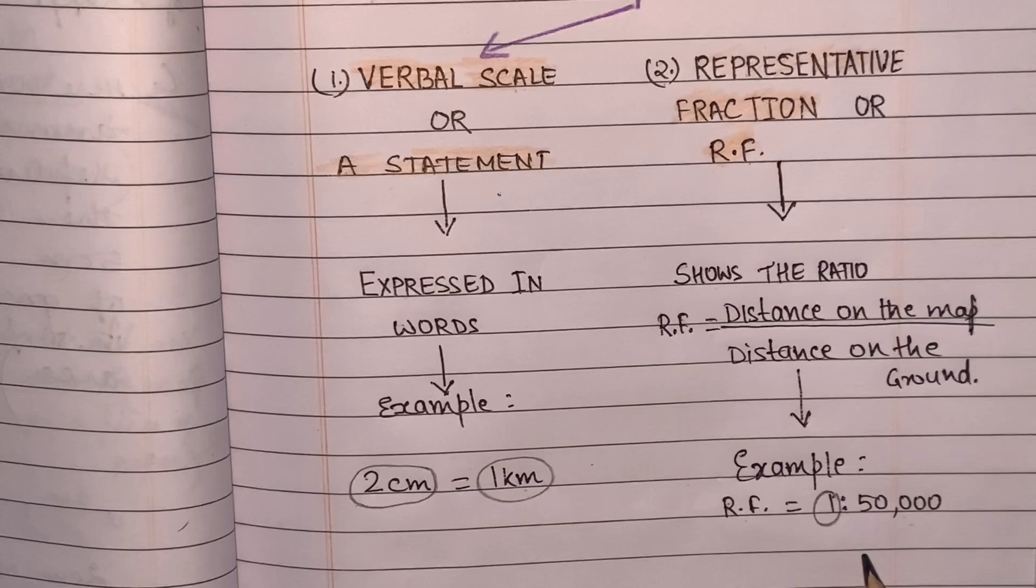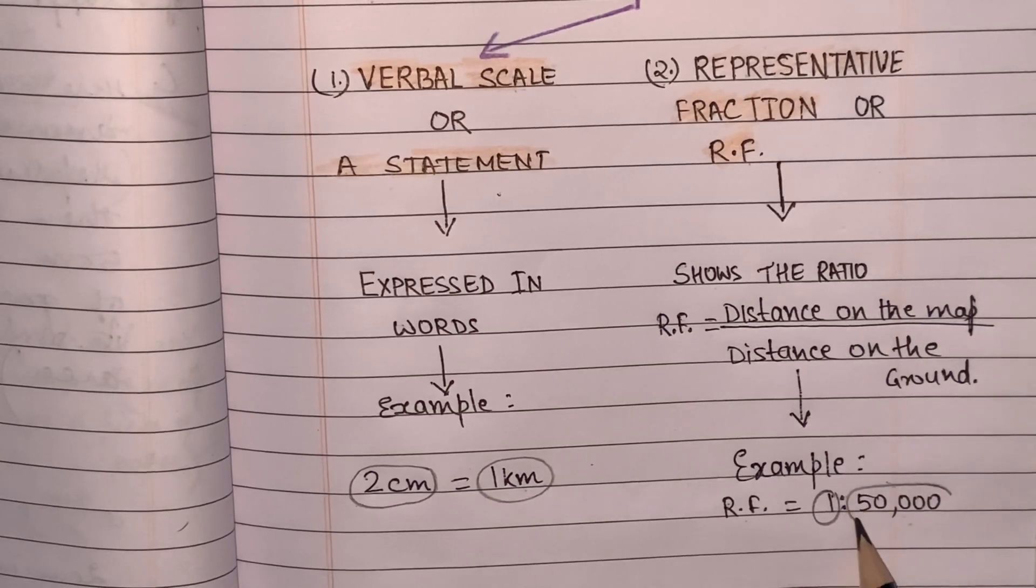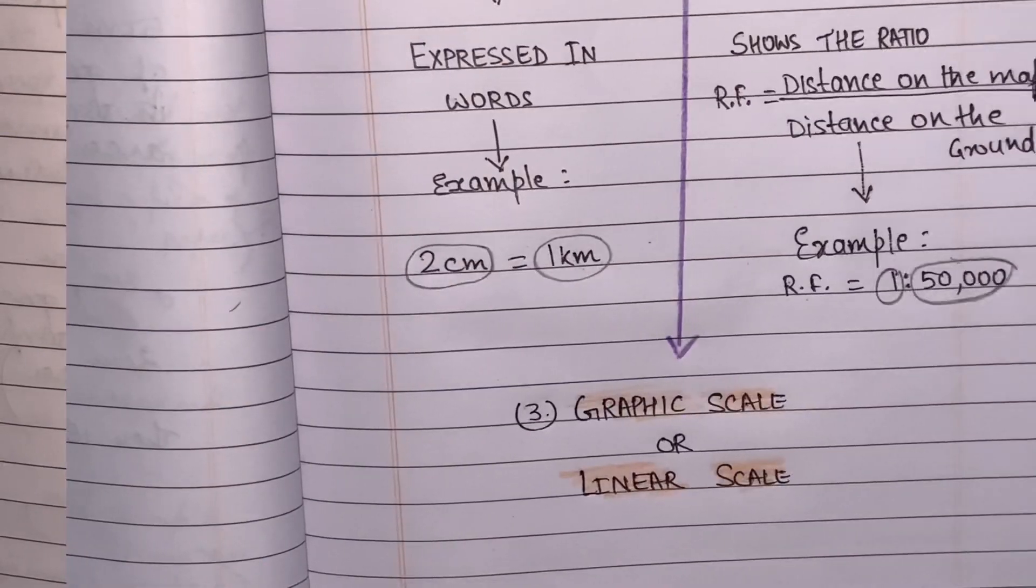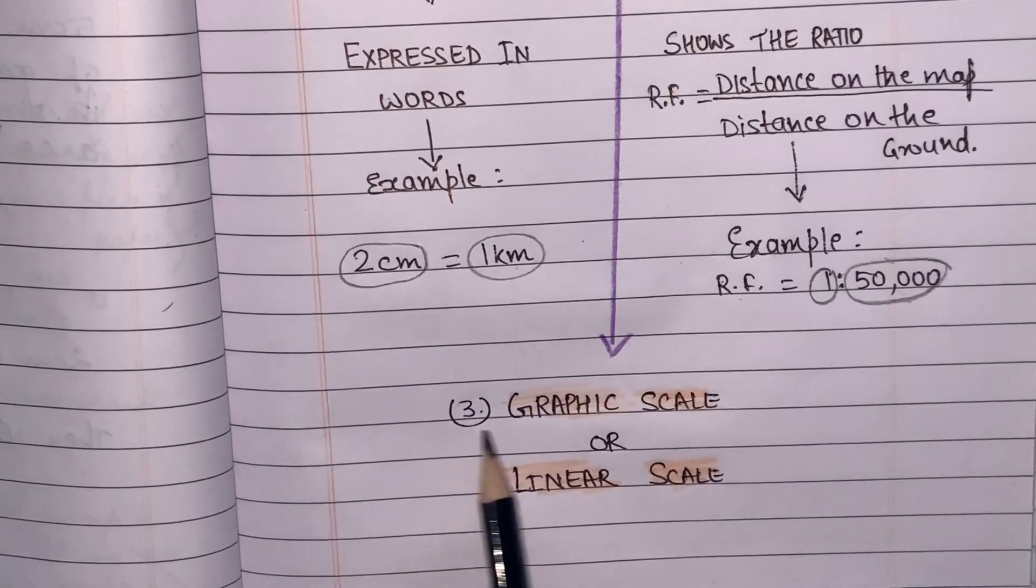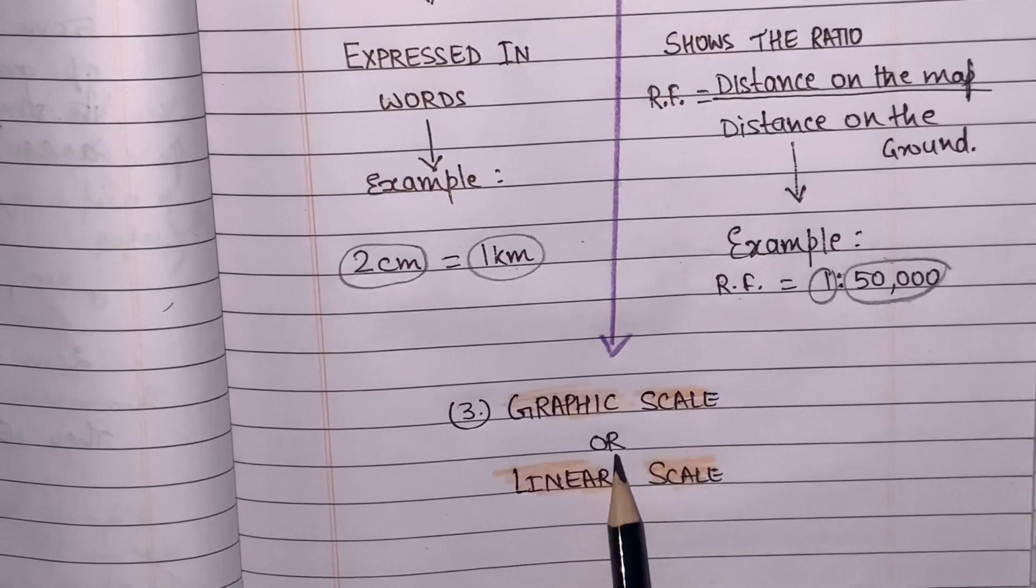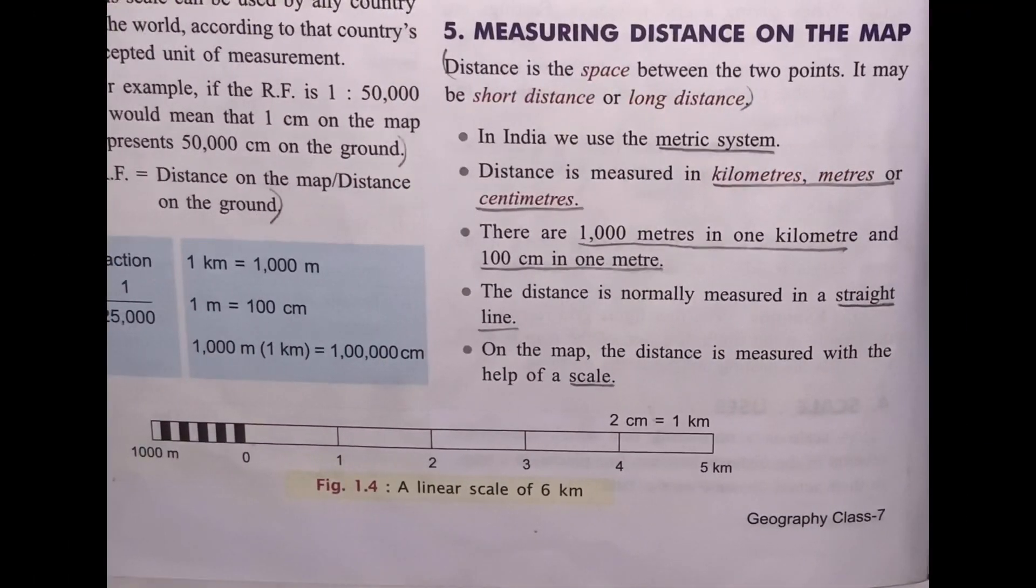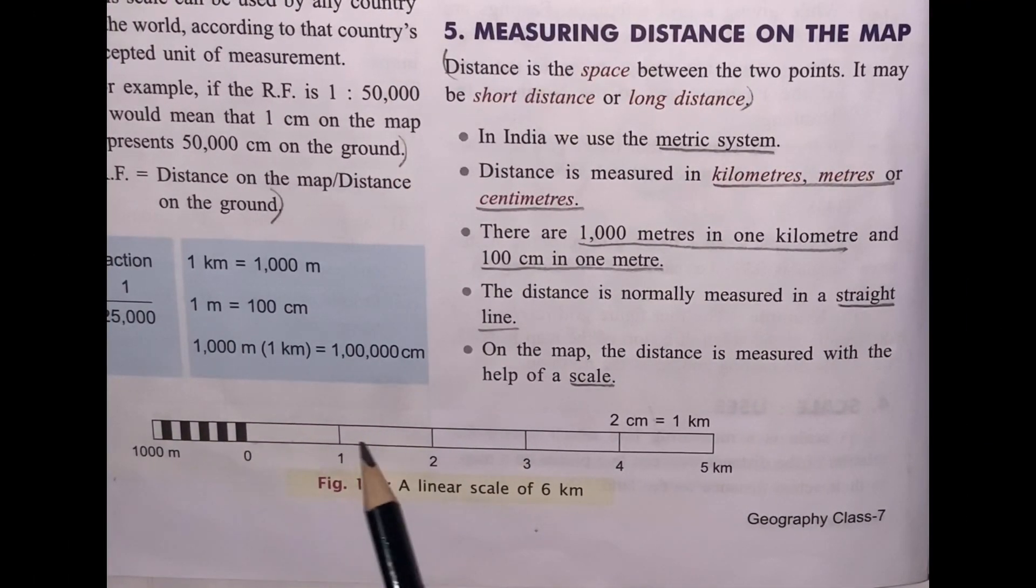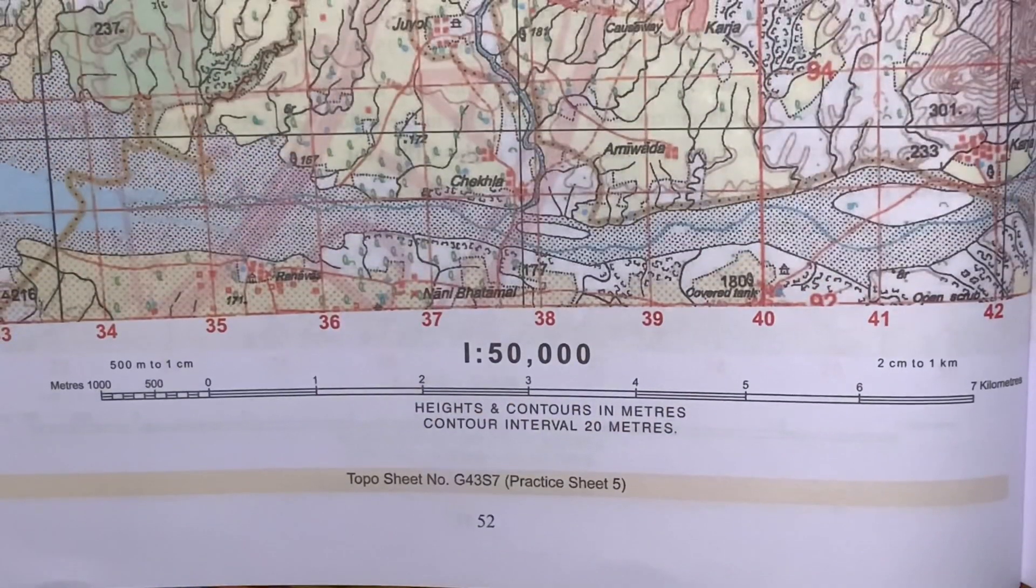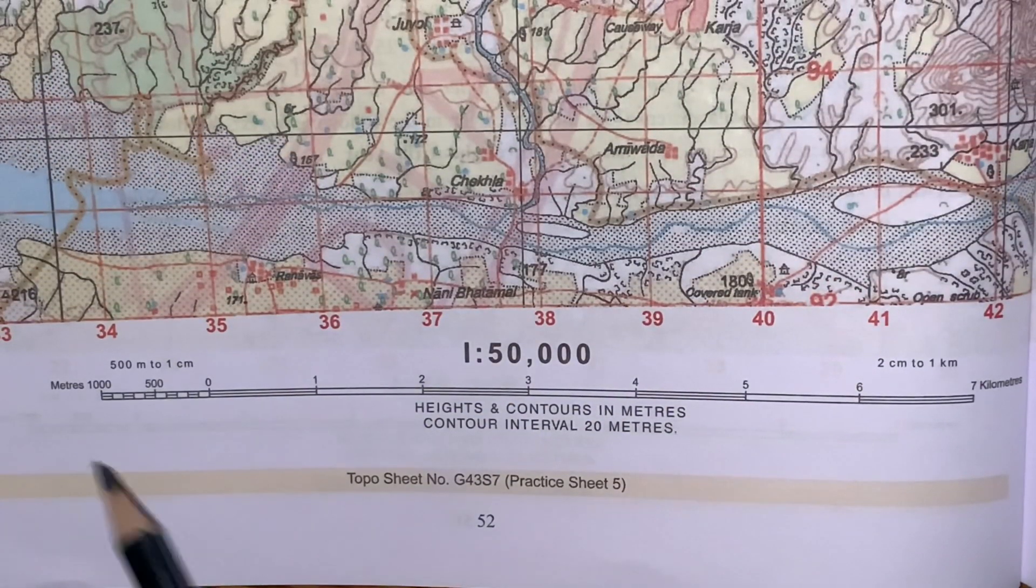The third type is graphic scale, also known as linear scale. This scale is drawn at the bottom of any topographical map, where you will find all three types of scales.